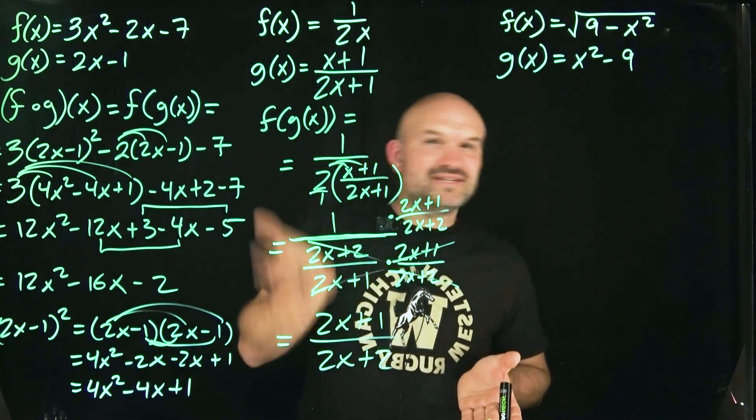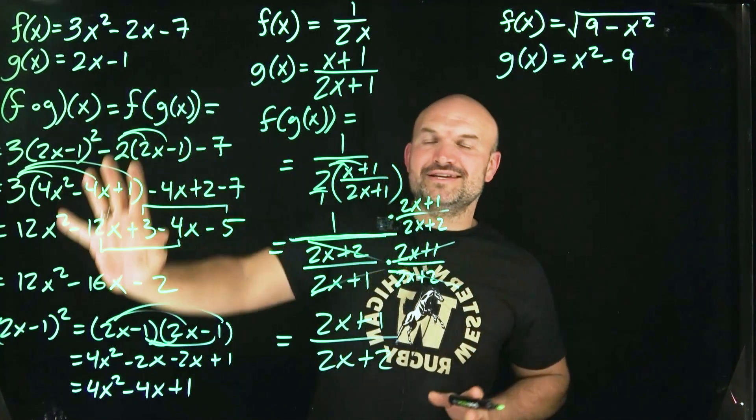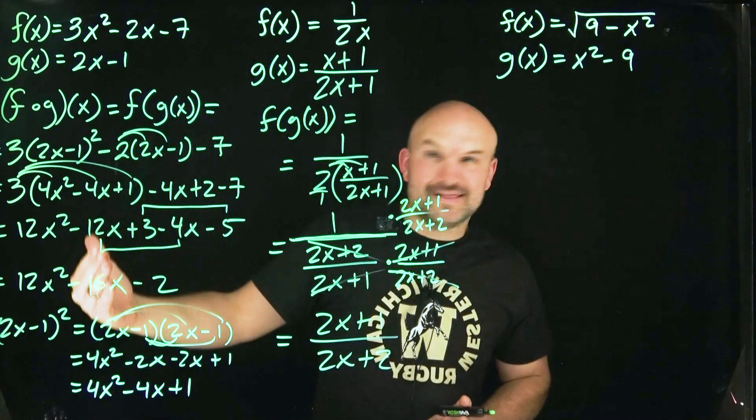And now, that's going to leave me with a 2x plus 1 divided by a 2x plus 2. And voila, that was it. It wasn't too bad. It looked a little bit more confusing than doing that, but we got through it.